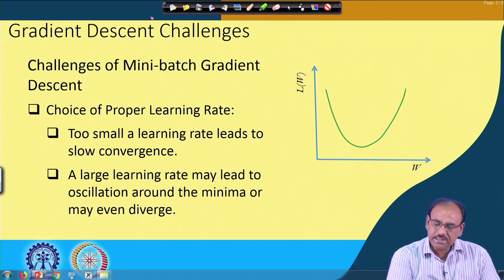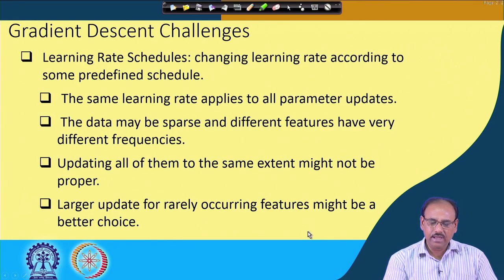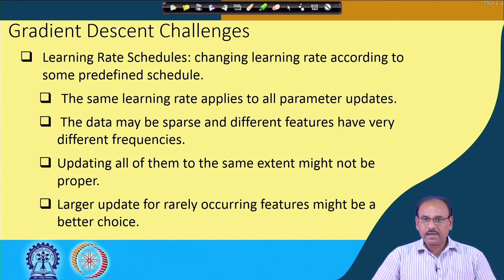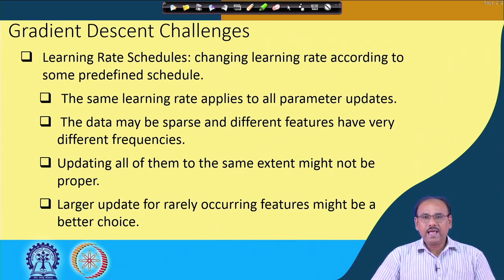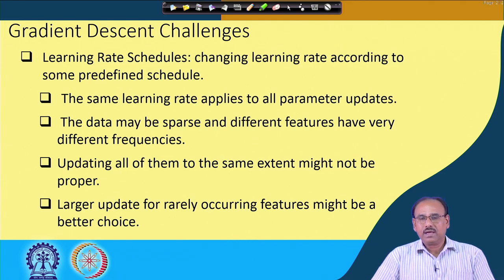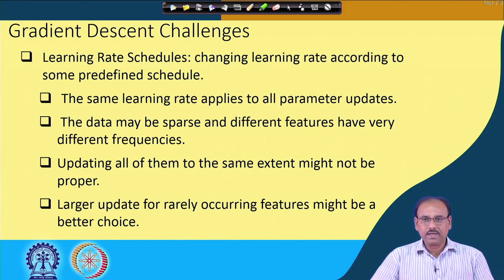The choice of a proper learning rate or step size for updating weights is very important. The second challenge in gradient descent is that even with a predefined schedule of how the learning rate changes over epochs, the same step size will be applied to all parameters or all components of your weight vector. This may not be appropriate because the gradient may be very large with respect to certain parameters and very small with respect to others.